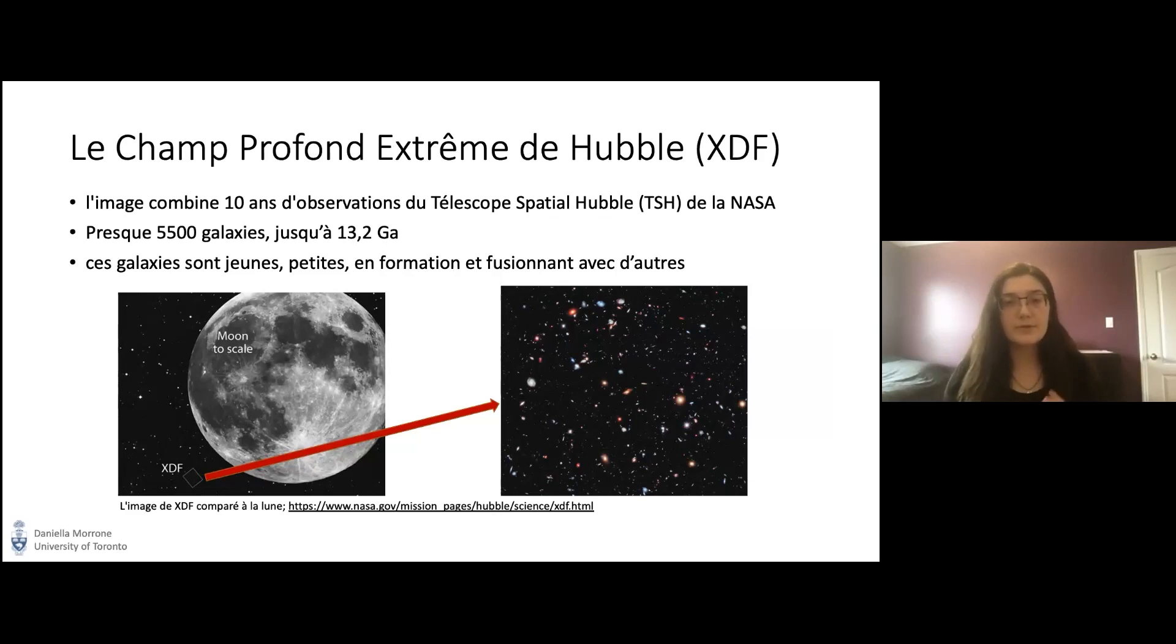Elle contient plus de 5500 galaxies dont la lumière a mis jusqu'à 13.1 milliards d'années pour atteindre la Terre, et ces galaxies sont jeunes, petites, en formation et fusionnant avec d'autres.